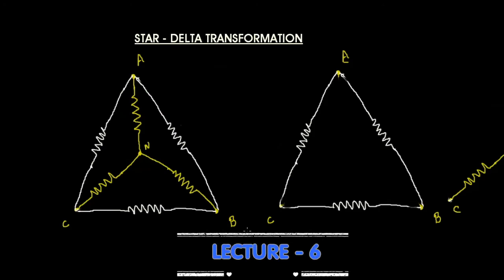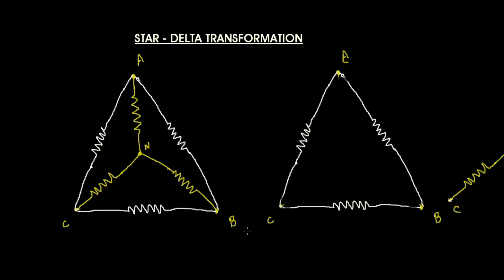In today's lecture we are going to discuss star and delta transformations. Figure one shows the star and delta combinations together. The outer one looks like the symbol delta, and the inner yellow one looks like the symbol star. If you invert the star, it looks like the letter Y — sometimes the star connection is also called the Y connection.